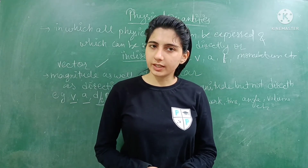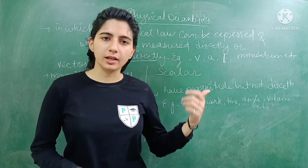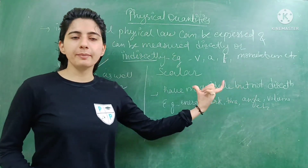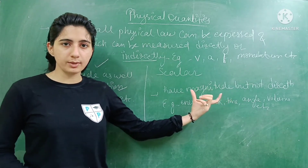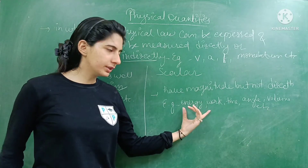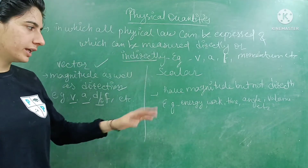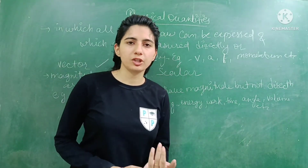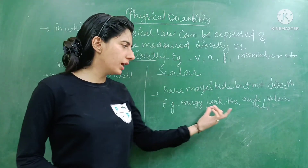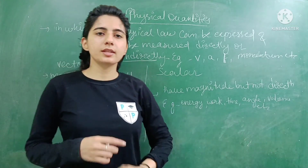For scalar quantities, the direction is not important — it is not compulsory. Scalar quantities have magnitude only, but direction is not required. For example: energy (potential or kinetic), work, time, angle, volume, etc. All of these are scalar quantities.